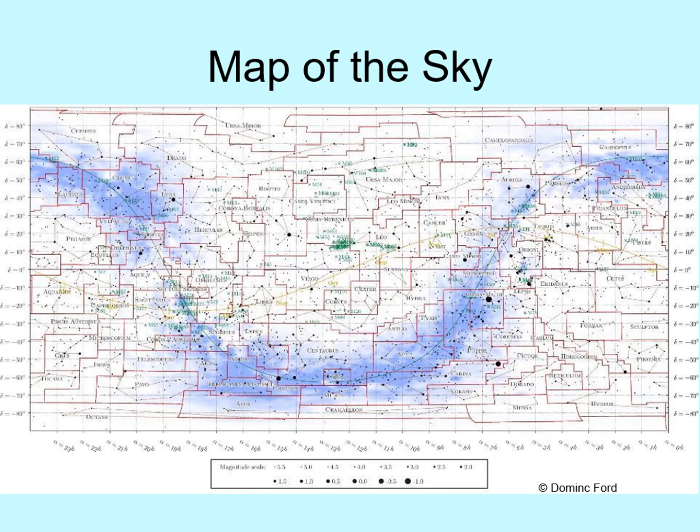There are also two curving lines cutting all the way around the map. The yellow one is the ecliptic, the path the Sun takes through the sky as the Earth orbits around it. Notice that it mostly passes through the zodiacal constellations. Can you see which constellation isn't part of the traditional zodiac that the Sun passes through? The other curving line is blue and has irregular blue patches all around it. This is the plane of our Milky Way galaxy. The blue patches are the brightest parts of the galaxy in our sky.